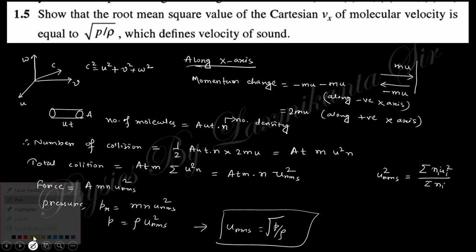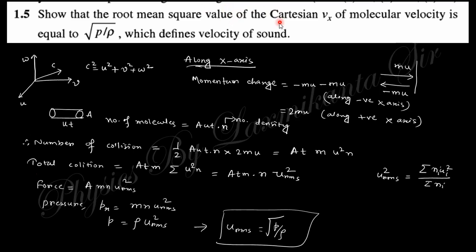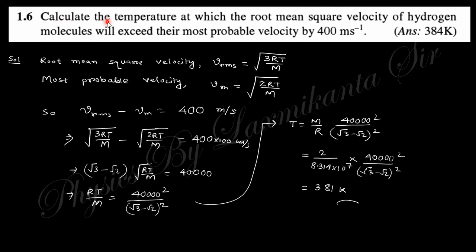Question five: show that the root mean square value of the Cartesian velocity component vx gives √(P/ρ), which defines the Newtonian velocity of sound. In Laplace's treatment the velocity of sound is √(γP/ρ). This question was already discussed in the previous lecture on the A.B. Gupta book, so the detailed derivation is not repeated here.